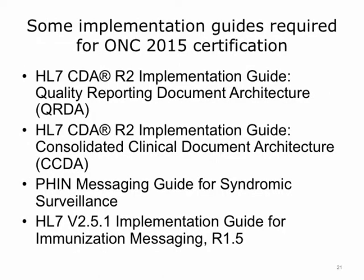Here are examples of implementation guides that are actually required for ONC 2015 Certification of Health IT. The first guide, QRDA, describes how to use HL7 CDA to specify a clinical quality measurement. The next one, CCDA, primarily describes a clinical summary for a patient and provides very specific guidance on how to represent and encode key data types of a care summary such as allergies, medications, problems, and results. The PHIN Messaging Guide for Syndromic Surveillance describes how to use HL7 Version 2 to communicate syndromic surveillance information to a public health authority. HL7 V2.5.1 Implementation Guide for Immunization Messaging R1.5 describes how to use HL7 Version 2 to communicate and share immunization information between providers and public health authorities.